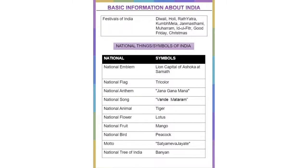The national things and symbols of India: The national emblem is the Lion Capital of Ashoka at Sarnath. The national flag is tricolor. The national anthem is Jana Gana Mana. The national song is Vande Mataram. The national animal is Tiger. The national flower is Lotus. The national fruit is Mango. The national bird is Peacock. The motto is Satyamev Jayate. The national tree of India is the Banyan tree.